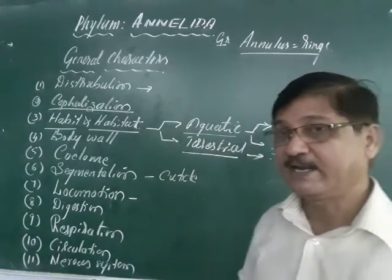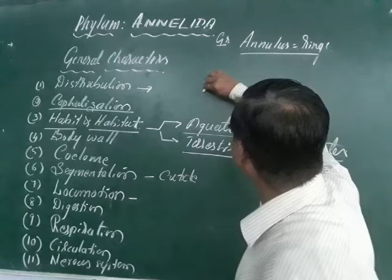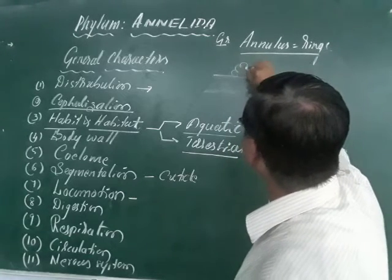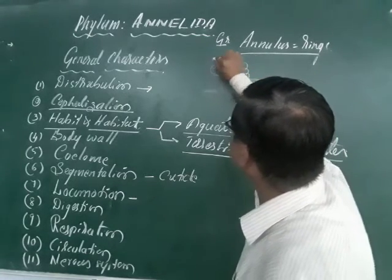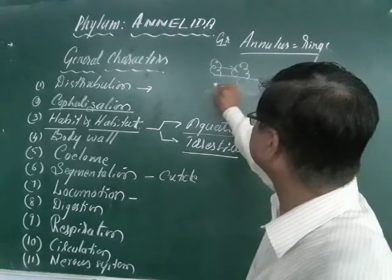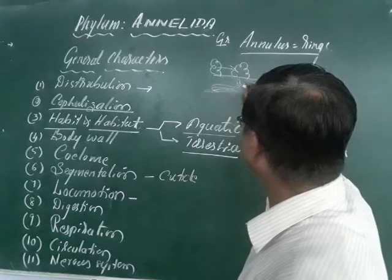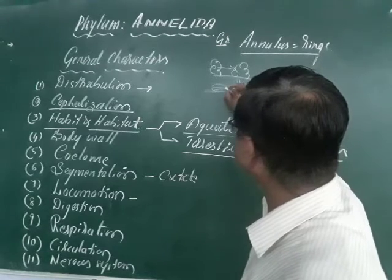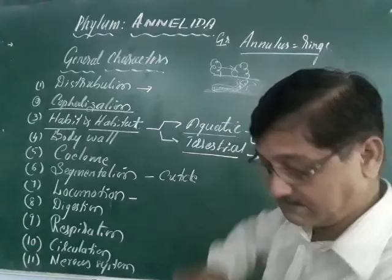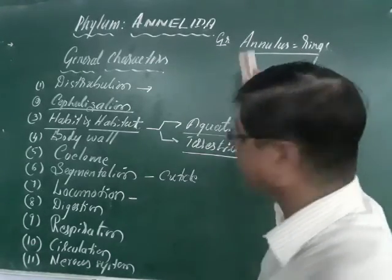The earthworm shows castings on the surface of the ground; on that basis we are able to confirm their presence. If living in an area, it shows casting like this. So the presence of earthworm is indicated by casting on the surface of the ground.